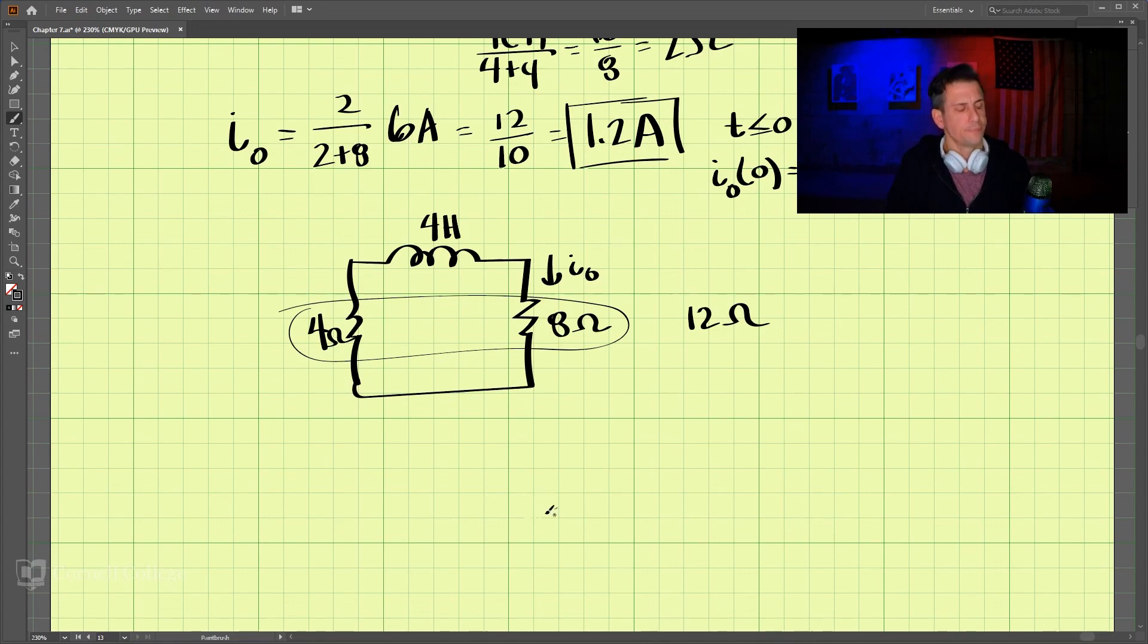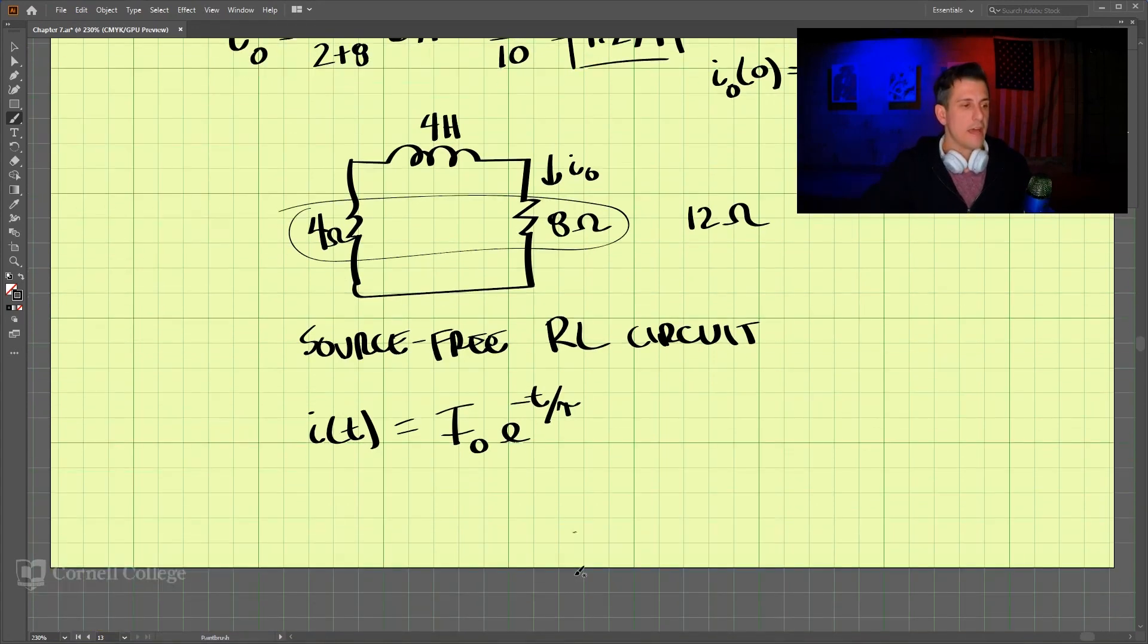And now we have a source-free R-L circuit. And if we have a source-free R-L circuit, we know that the current as a function of time is equal to I-naught times E to the negative T over tau. And our time constant, tau, is equal to L over R.